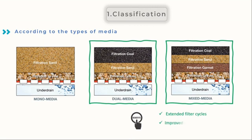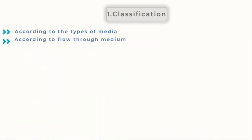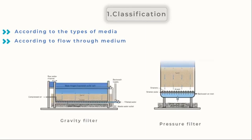Additionally, they produce potable water of excellent quality at faster flow rates. Finally, because of how they are made, they can hold more contaminants before needing to be backwashed. The flow through media can also be used to classify filters, such as gravity and pressure filters.